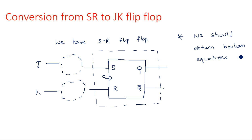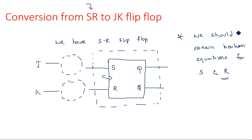We need to obtain Boolean equations for S and R. In the conversion from SR to JK flip-flop, for the flip-flop you are converting, you identify the Boolean expressions for S and R. The S expression will come in terms of J and K, and similarly the R expression will also come in terms of J and K.